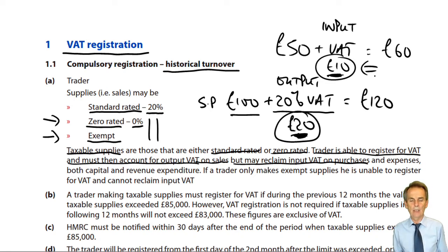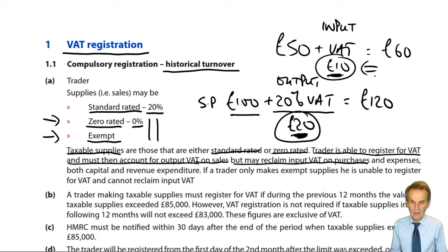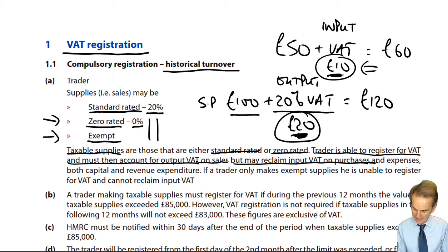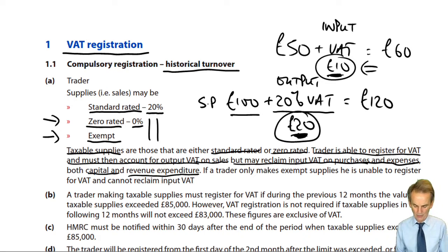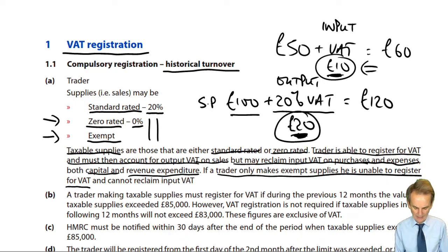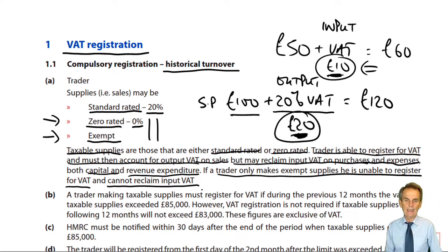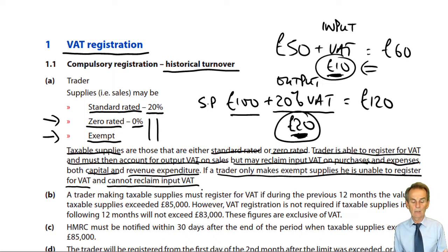Therefore, the £20 we would have otherwise owed to HMRC is reduced by the £10 of input VAT. For a VAT return period, we take output VAT minus input VAT. We have to be registered for VAT to account for VAT, and we may reclaim input VAT on purchases and expenses — that doesn't matter whether it's capital or revenue expenditure.